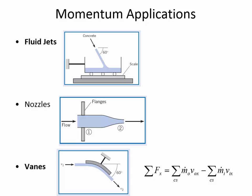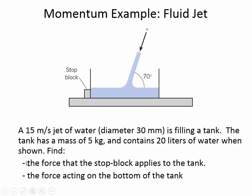Here are the three broad categories of momentum applications in chapter 6: fluid jets, where we find the force arising from a jet entering a body like a container; nozzles, where flow changes velocity and an external force is required to hold the system steady; and vanes, where fluid flow is redirected by a plate. Today we'll look at jets and vanes.